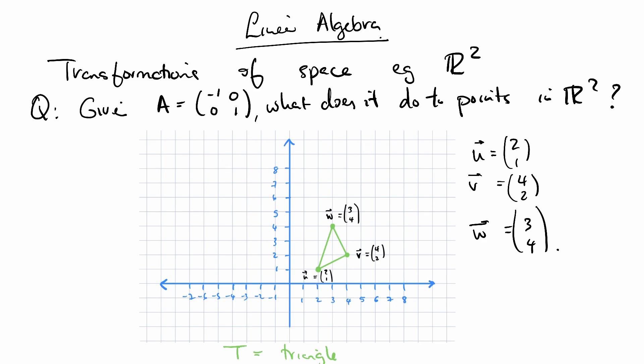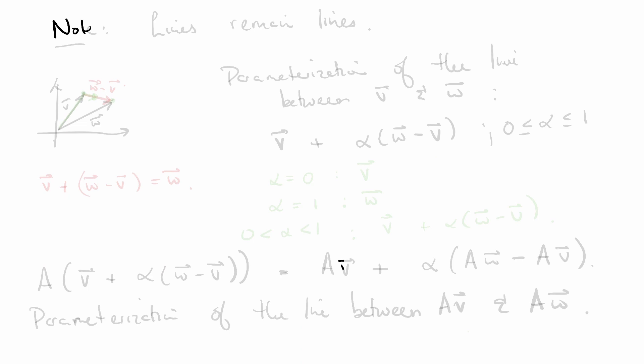This might actually still seem like a hard problem because the triangle itself has a lot of points in it. Do we actually have to sit down and work out what happens to every single point in the triangle? Well, the answer is no. We can simplify this by noting first that lines remain lines. I'll explain what this means and then I'll talk about why this helps us.